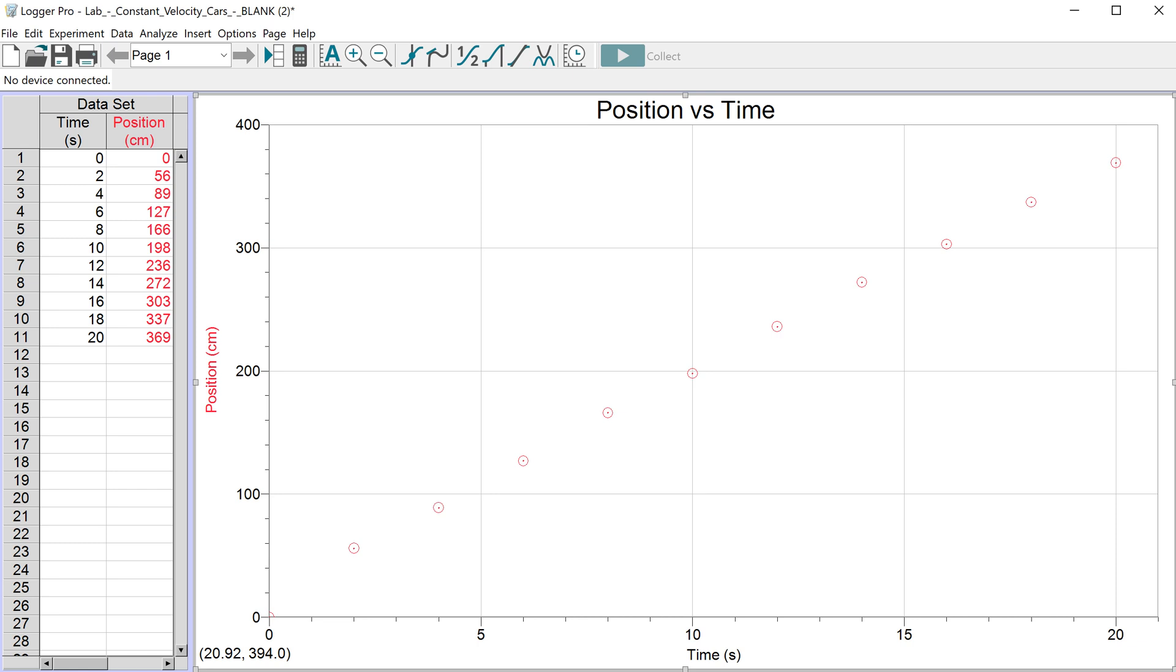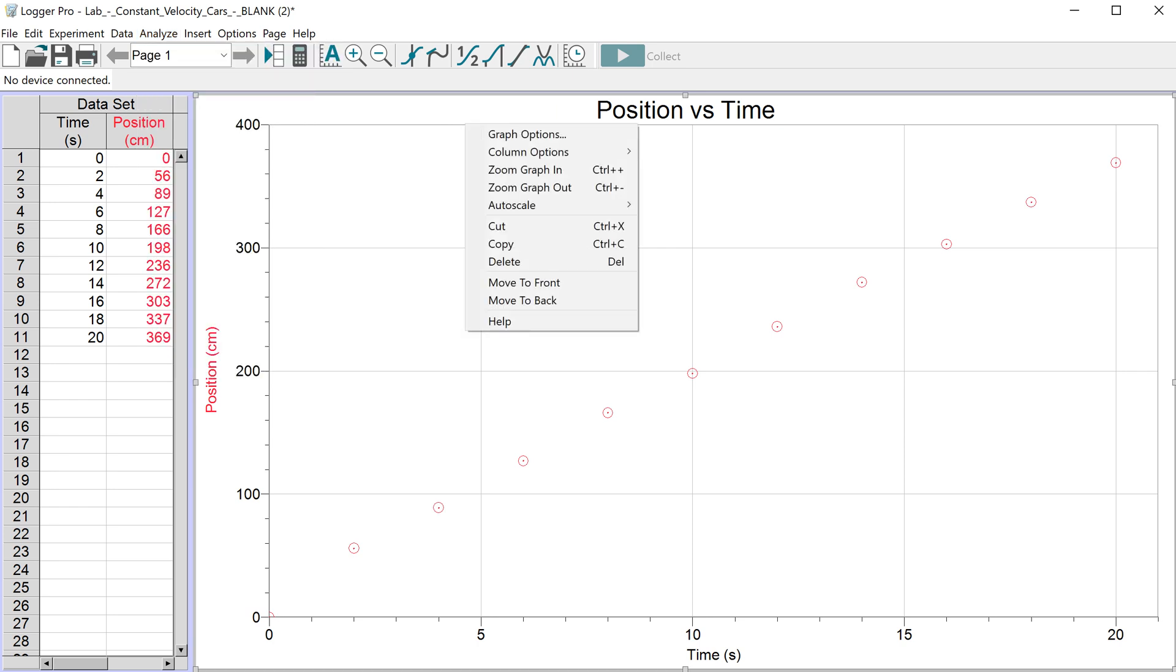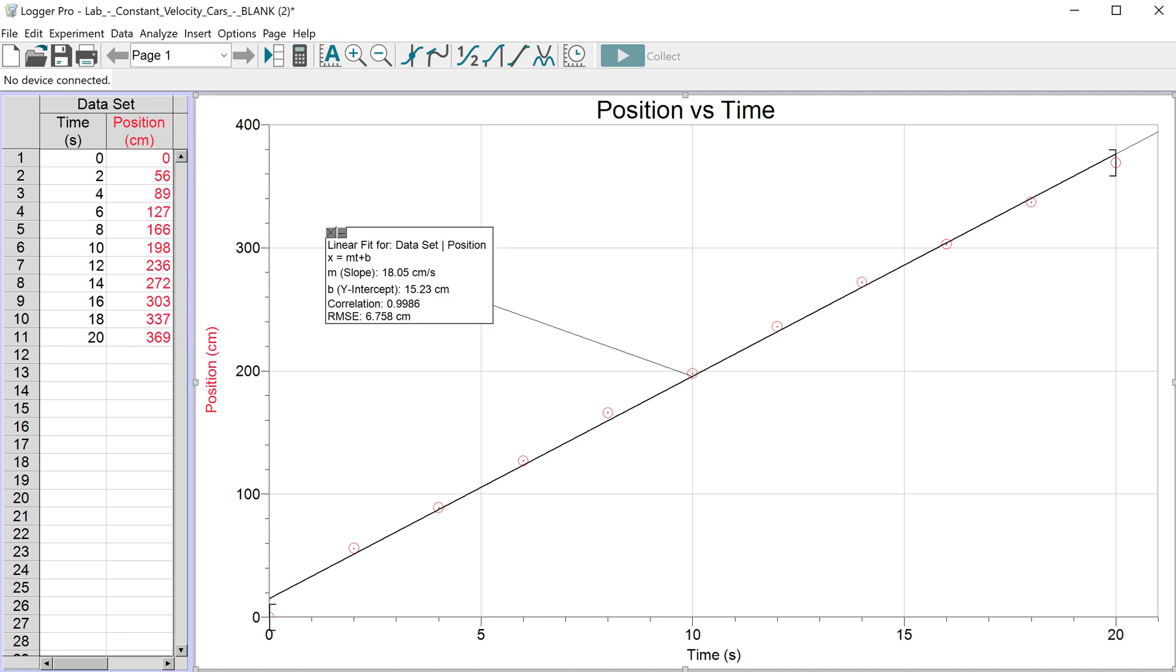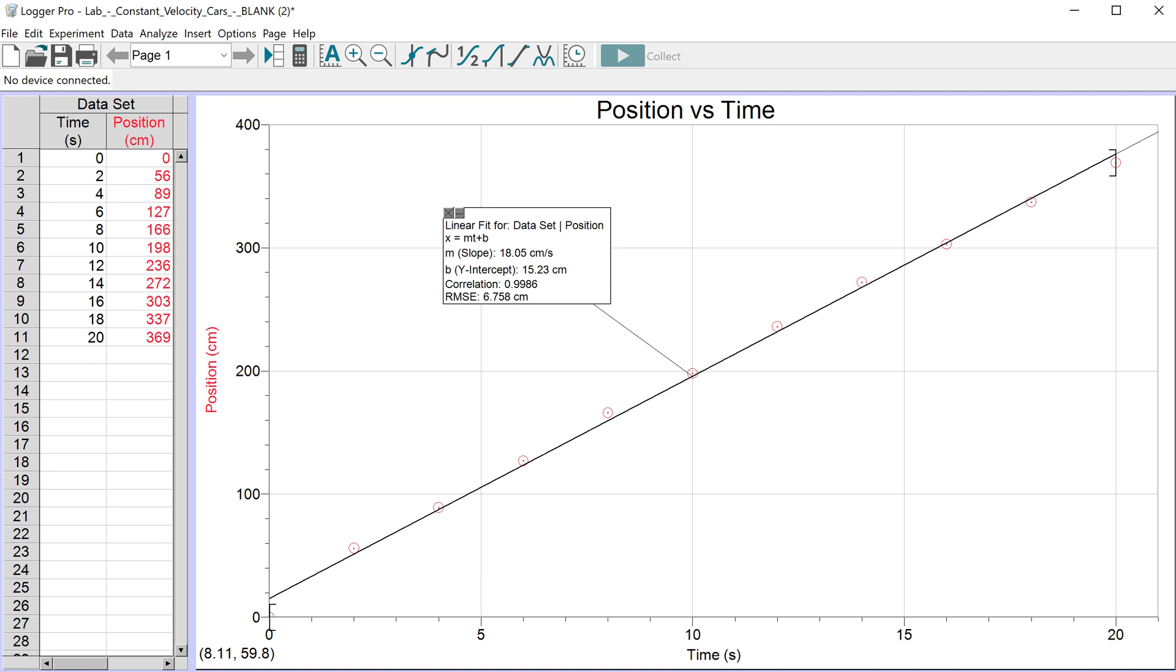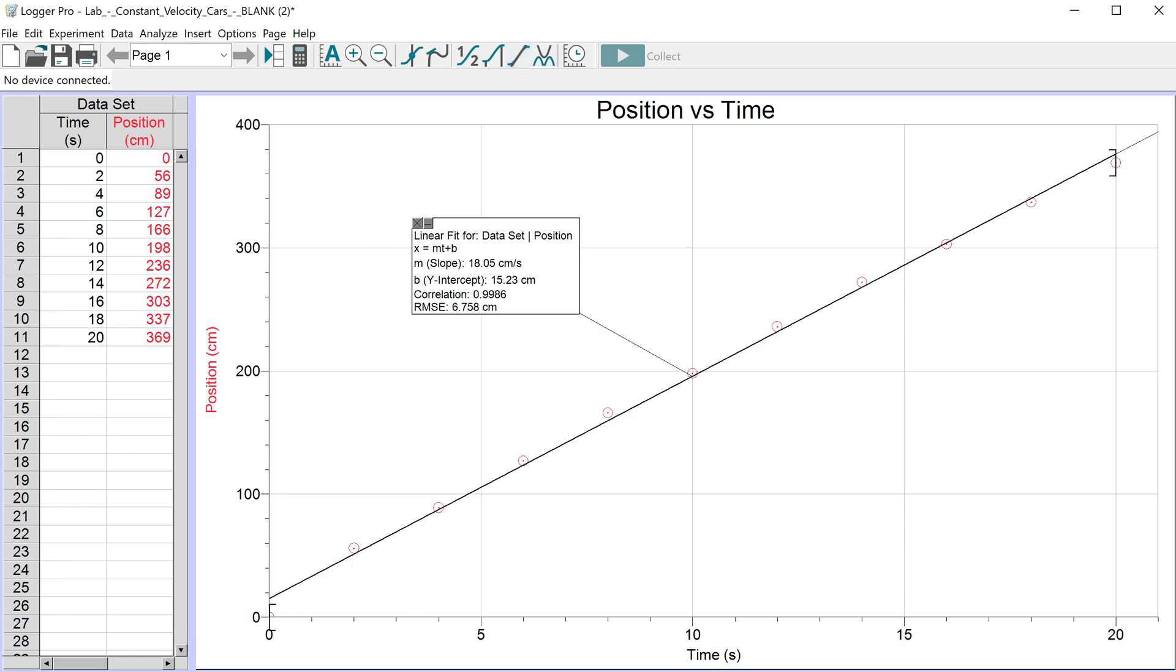To get a line of best fit you can go to analyze linear fit, but first you have to click the graph so you know that it's clicked by these little bars in the corner, and you're going to analyze linear fit and it'll give you a line of best fit. Alternatively, if you click your graph and you press this button right here which is a shortcut it will give you a linear fit.